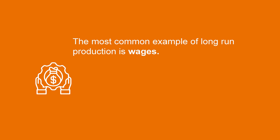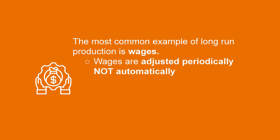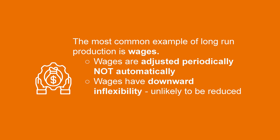What's the most common example? Wages. Wages are the payments for labour, which is an input used for most final products. Wages have two main qualities: first, they are adjusted periodically and not automatically; and second, they have downward inflexibility, which means that as they adjust they are unlikely to be reduced. Those qualities are significantly different from final products, which can adjust their prices more quickly.